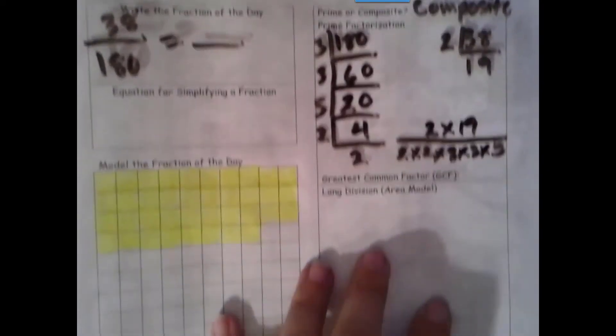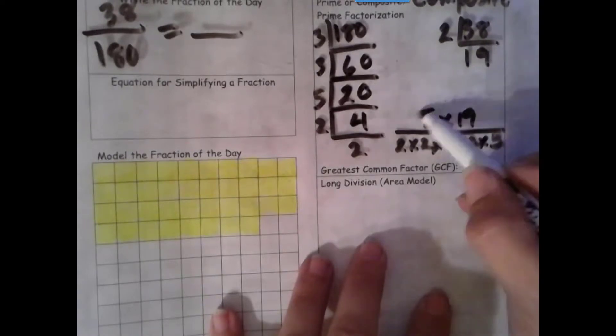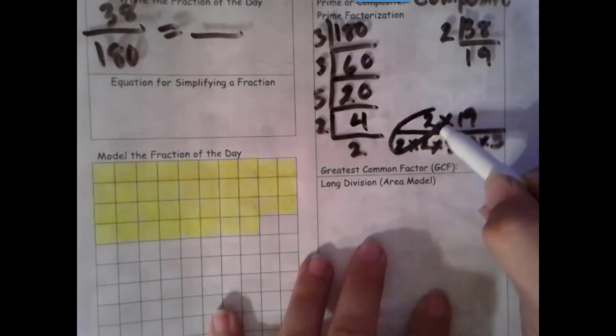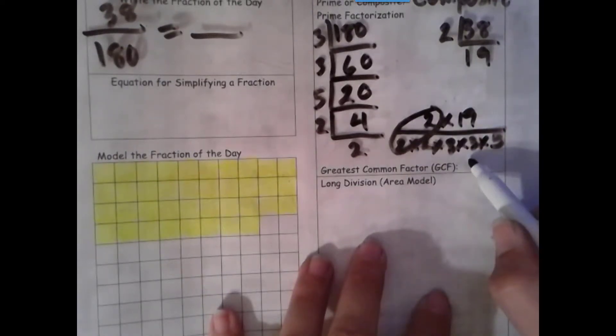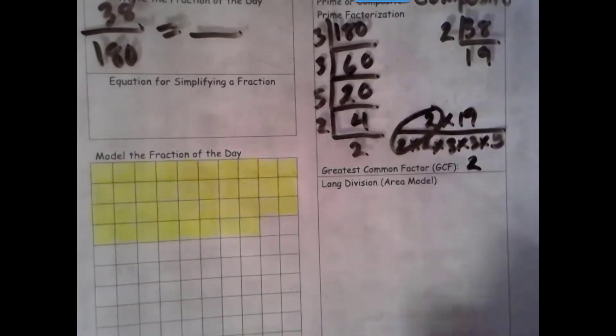So let's see what's common in both our numerator and denominator, and that is 2. So our greatest common factor is 2. We're left with 19 up here, so our numerator is 19. 2 times 3 is 6, times 3 is 18, times 5 is 90. So it's going to be 19/90s.